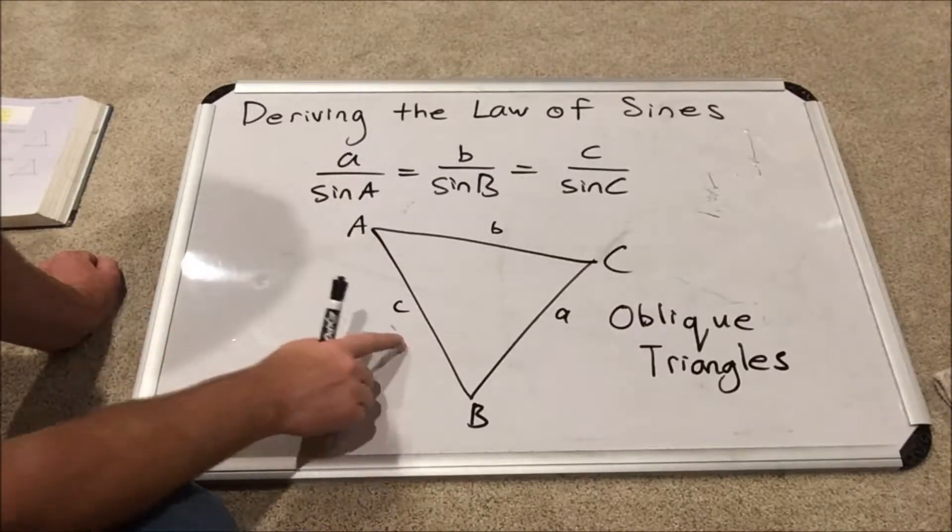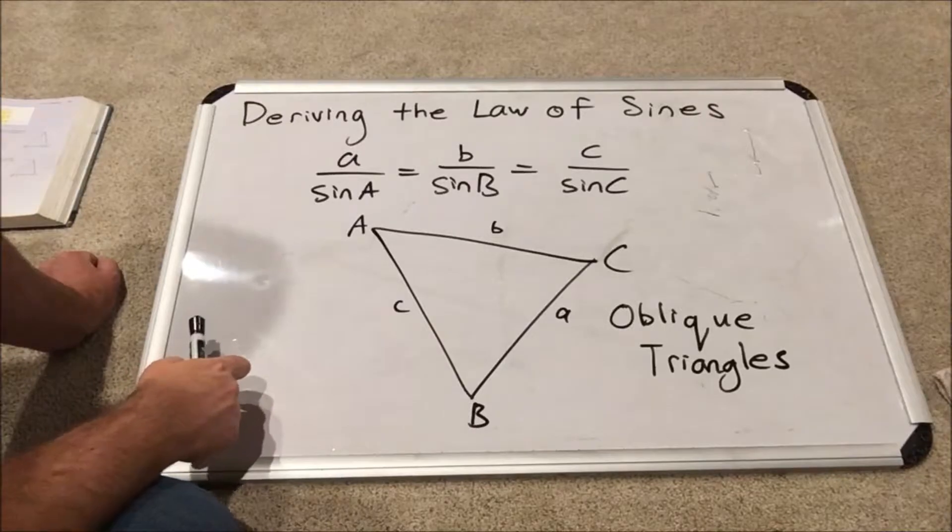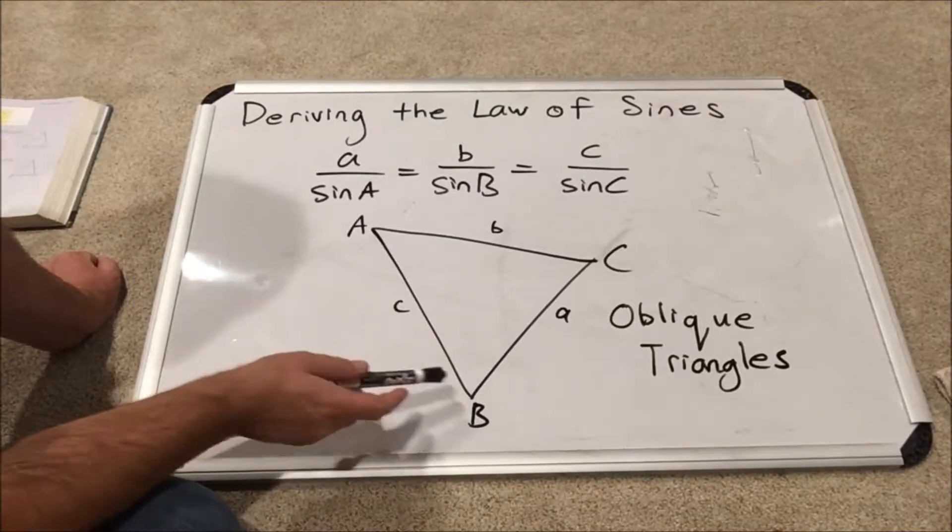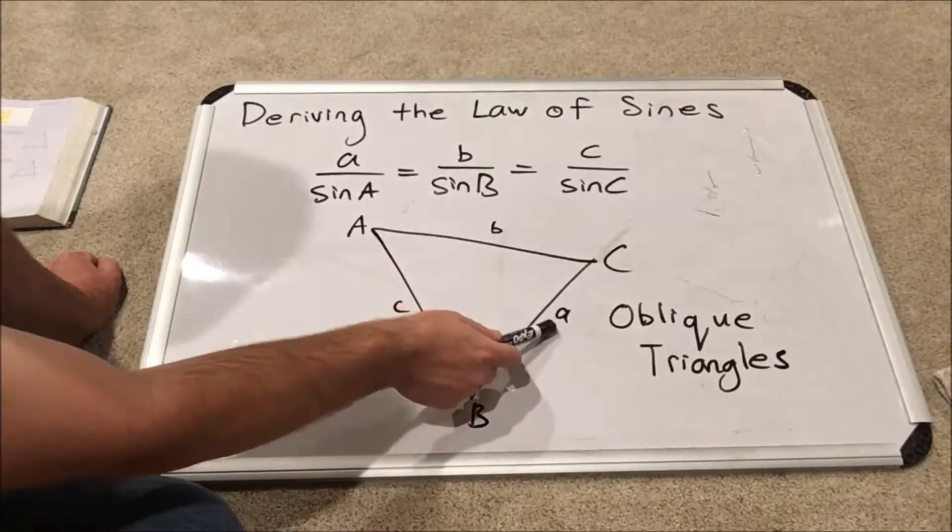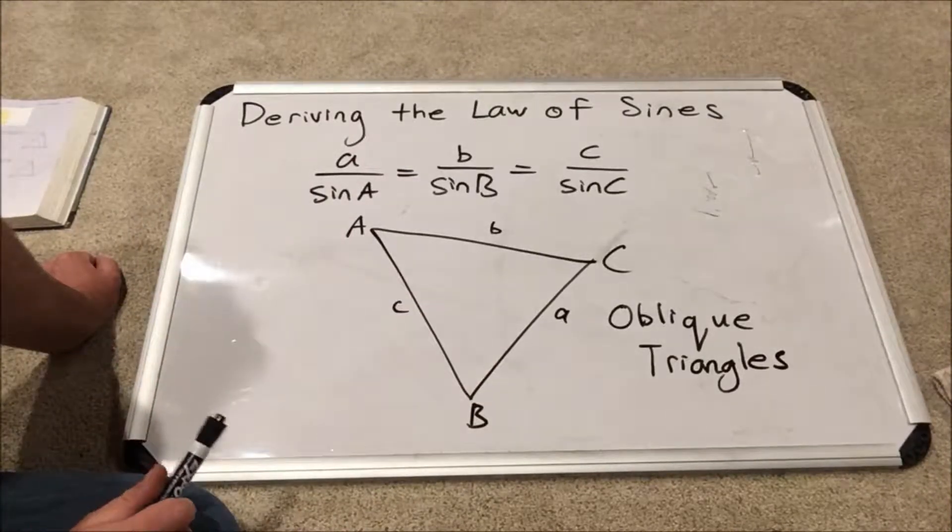The sides of our usual oblique triangles are labeled with lowercase letters, and the capital letters are used for the opposite angle. So for example, side A is over here and angle A is opposite of side A.